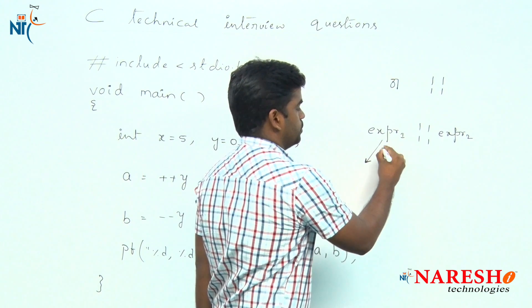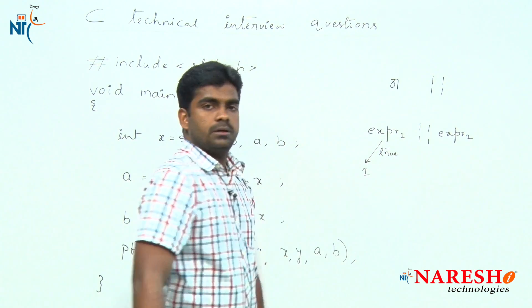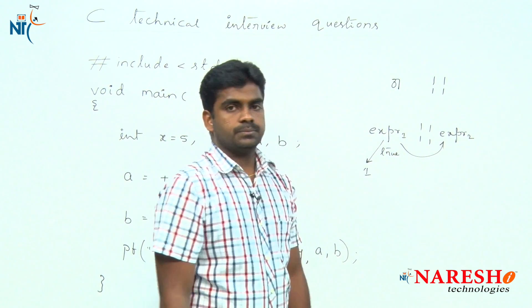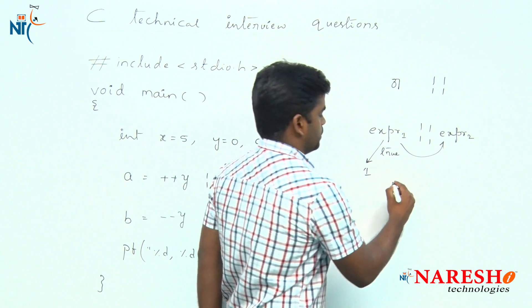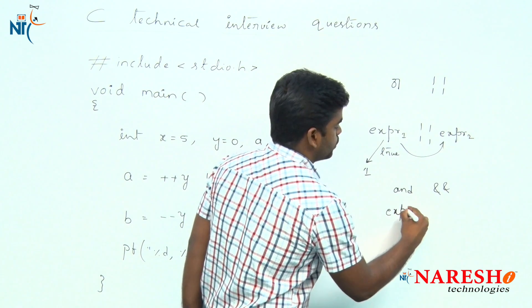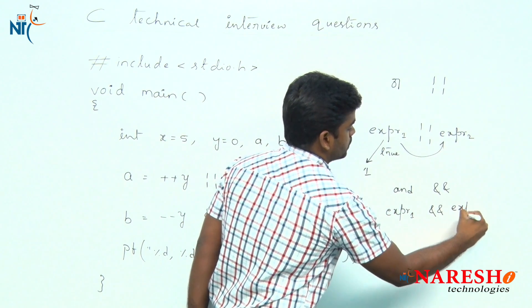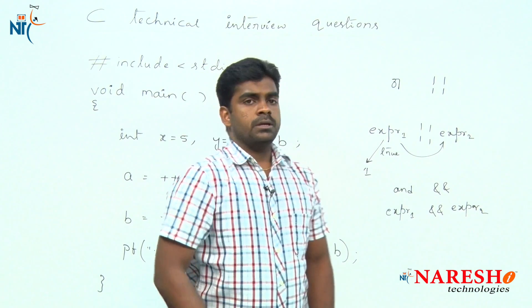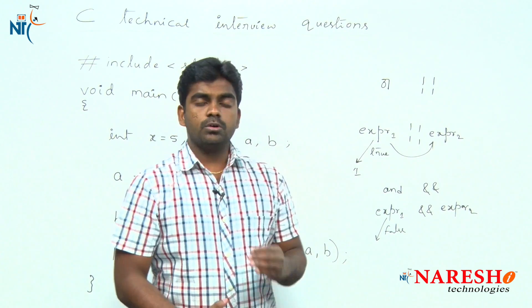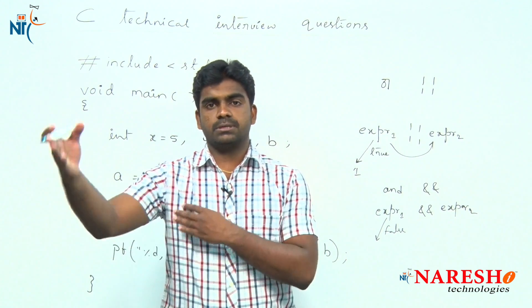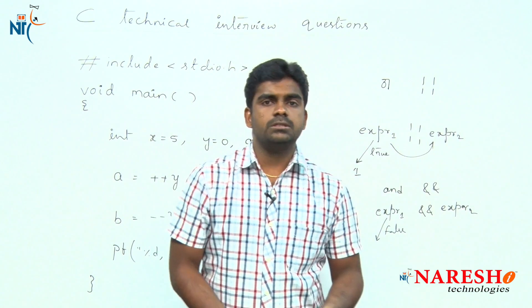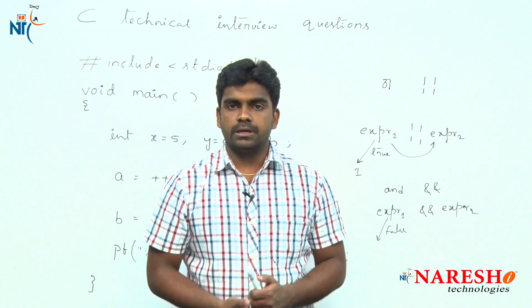So if the first expression is true, it directly returns true. If the first expression has failed, then only it will go and check the second one. For the logical AND operator — the double ampersand — both expressions must be true. If both are true, only then will it return true. If the first expression is false, it will not go and check the second expression. Suppose there are 100 expressions and the first is false — the remaining 99 being true is of no use.